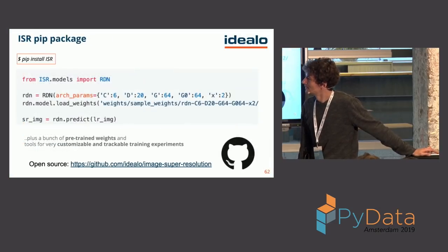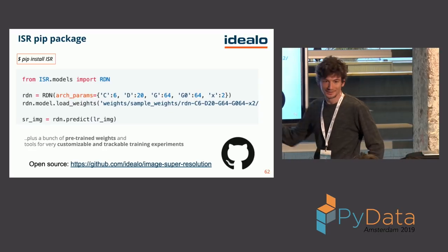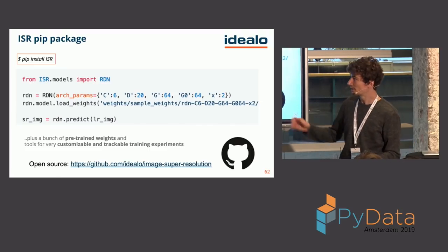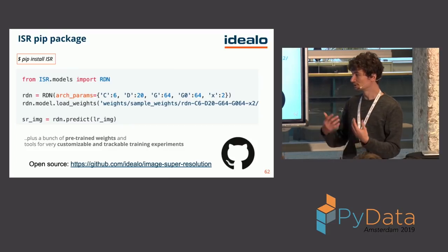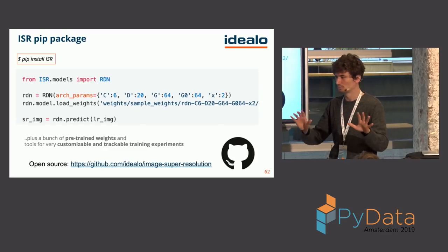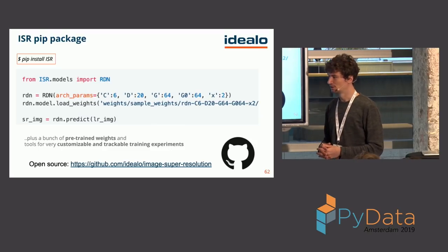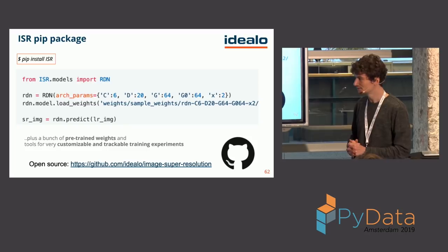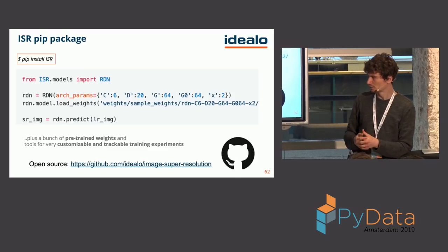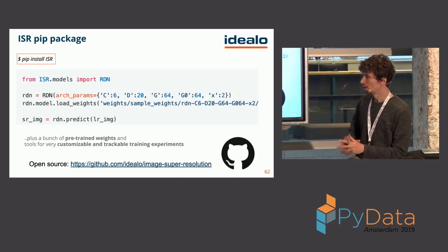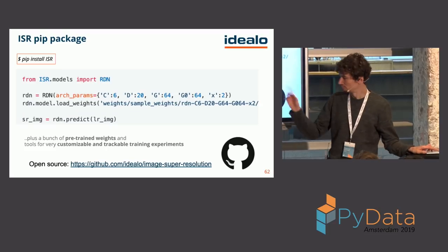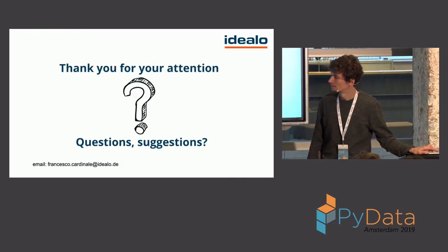In recap, everything in deep learning experiment tracking is important — if you think something isn't, it is. All the code, every script I used, is packaged and available as a pip-installable package on the Idealo GitHub page. It includes pre-trained weights so you can do upscaling in three or four lines of code. Thank you.